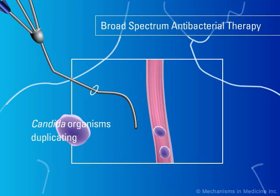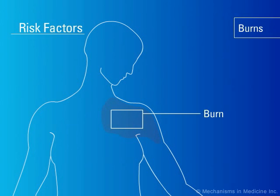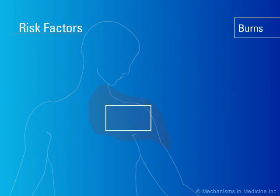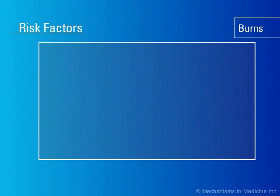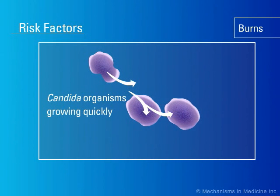The third risk factor of significance predisposing patients to candidemia and invasive candidiasis is the presence of extensive burns over more than 50% of the body. In the situation of an extensive burn, the integumentary barrier is stripped away. This allows bacteria and Candida species that normally colonize the skin to proliferate and invade tissues in an unfettered fashion, producing invasive disease.